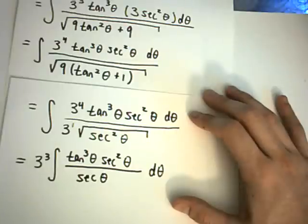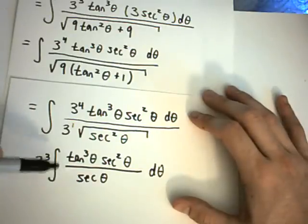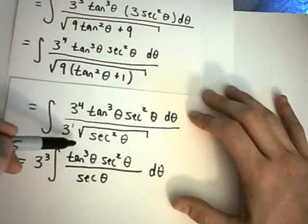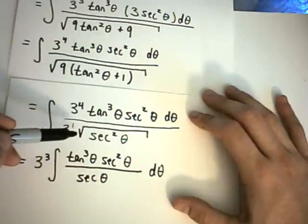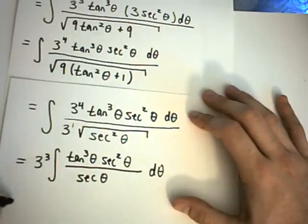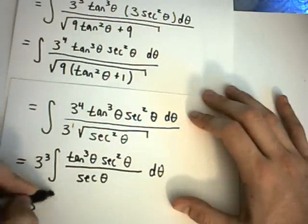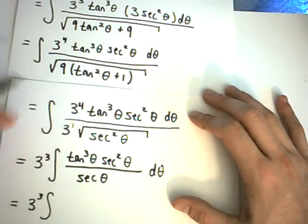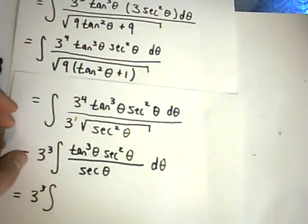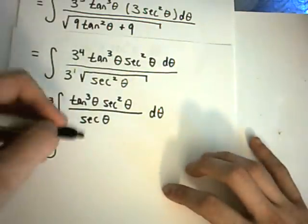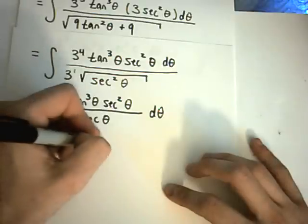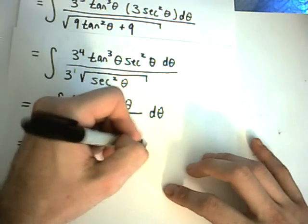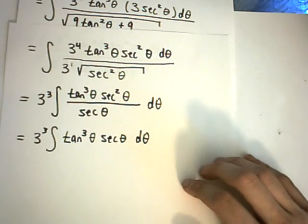And, this is really the point of the whole problem, is the fact that the substitution will get rid of the square root. And, that's definitely a nice thing to have. So, let's rewrite this a little bit more. So, notice now I can cancel the secant theta out on the bottom, with one of the secant thetas on the top. So, I'll be left with tangent cubed theta, secant theta, d theta.